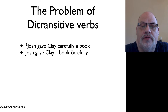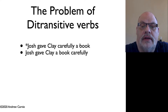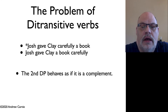The same thing seems to be true with a double object verb, where you have two noun phrase objects. You can't put an adverb like 'carefully' between the first and the second internal arguments. So 'Josh gave Clay carefully a book' is ungrammatical — you have to put the adverb at the end. That suggests that Clay and 'a book' are both complements, but our tree structure and rules can't generate that. So how are we going to fix that problem?